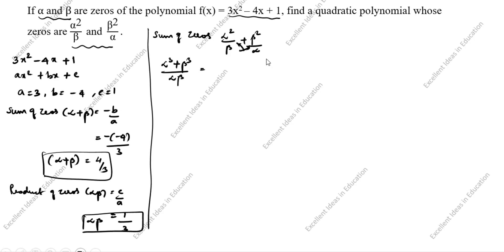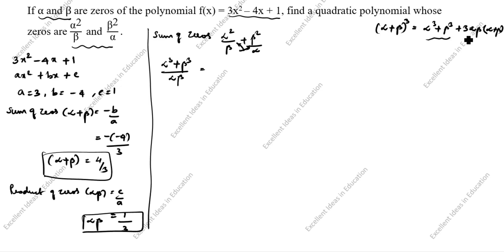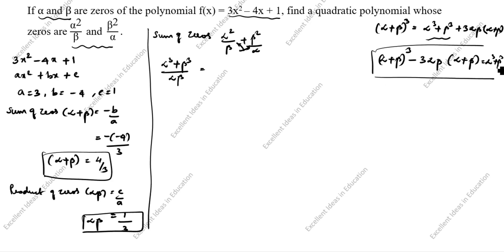What is the formula for alpha³ + beta³? We start from: (alpha + beta)³ = alpha³ + beta³ + 3·alpha·beta·(alpha + beta). Rearranging, we get: alpha³ + beta³ = (alpha + beta)³ - 3·alpha·beta·(alpha + beta). So the sum of zeros becomes: [(alpha + beta)³ - 3·alpha·beta·(alpha + beta)] / (alpha·beta).